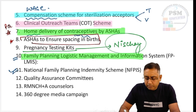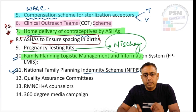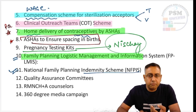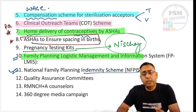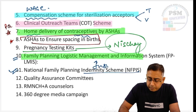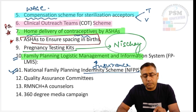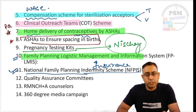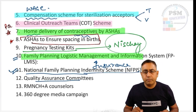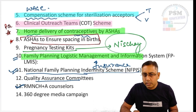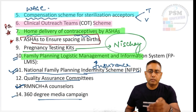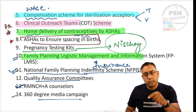The National Family Planning Indemnity Scheme is insurance given to recipients or acceptors of permanent modes of sterilization. In case there is failure of contraception, fatality, death, or casualty due to contraception or its related procedure, it is an insurance scheme. Quality assurance committees have been set up under Mission Parivar Vikas, RMNCH+ A counselors are there, and the 360 media campaign has already been discussed — these are the 14 points updated under the National Family Planning Program.